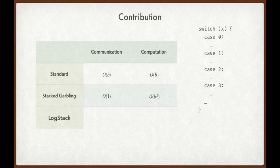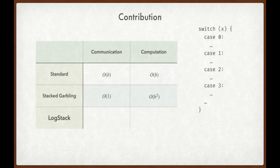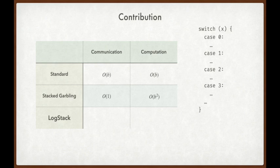Before we dive into any constructions, I'd like to have a look at the formal contribution of this work at a high level. Suppose that the function f has B branches, and further suppose that each branch has the same size. This restriction is used to simplify the analysis. In standard garbled circuits, the parties will separately handle each of the B branches. Thus, each party incurs communication and computation that is linear in the number of branches. Stacked garbling improves on the communication cost — the communication cost is independent of the number of branches. However, notice that the computation is made far worse. Together, the parties have to consume a quadratic amount of computation in the number of branches.